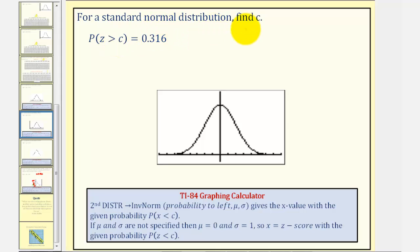For a standard normal distribution, we want to find C such that the probability of Z being greater than C equals 0.316.